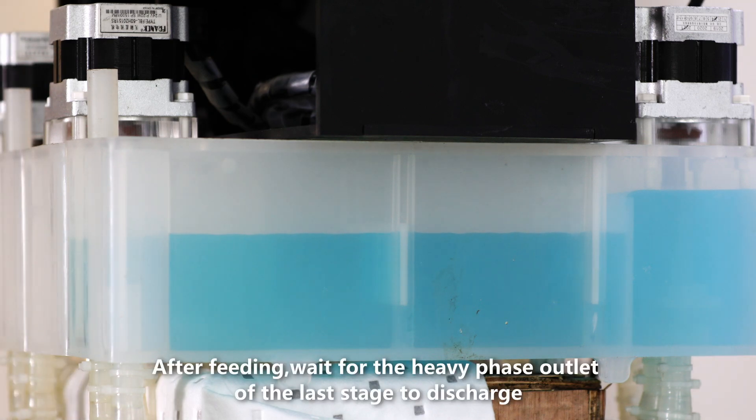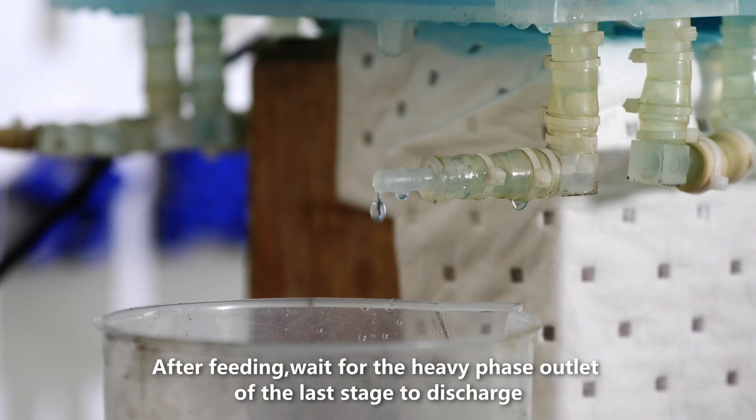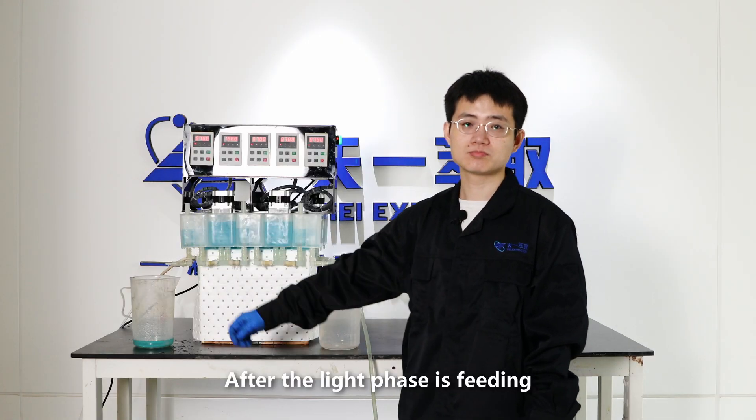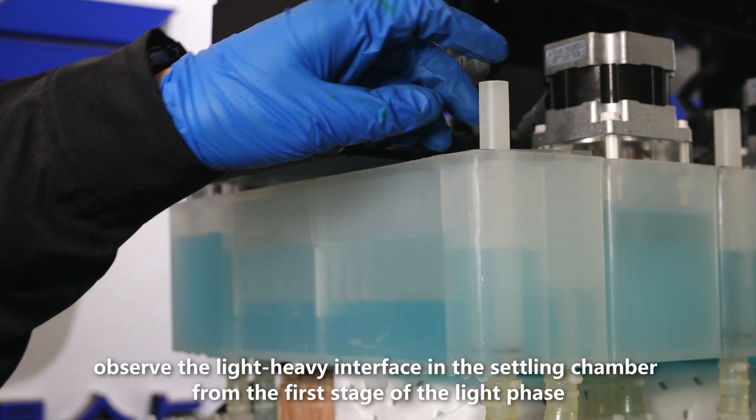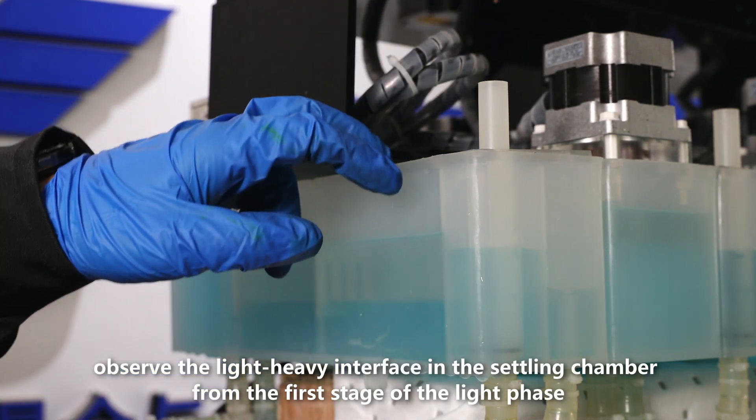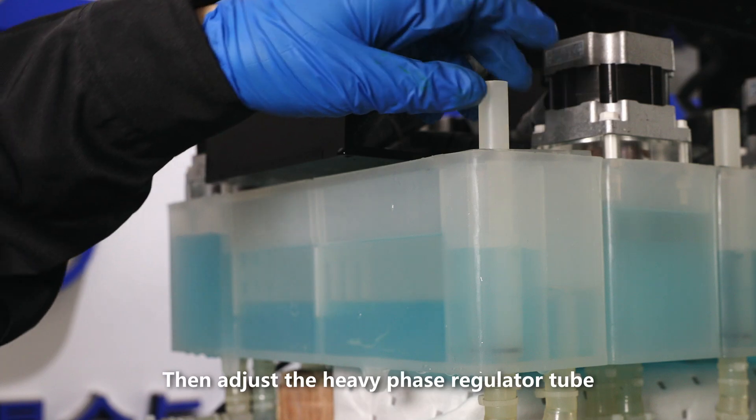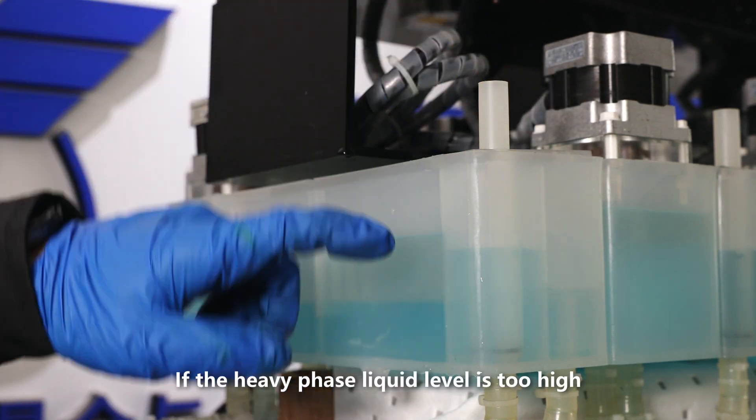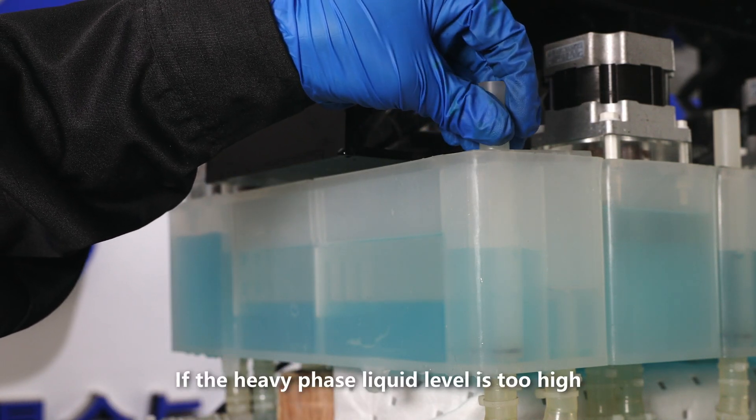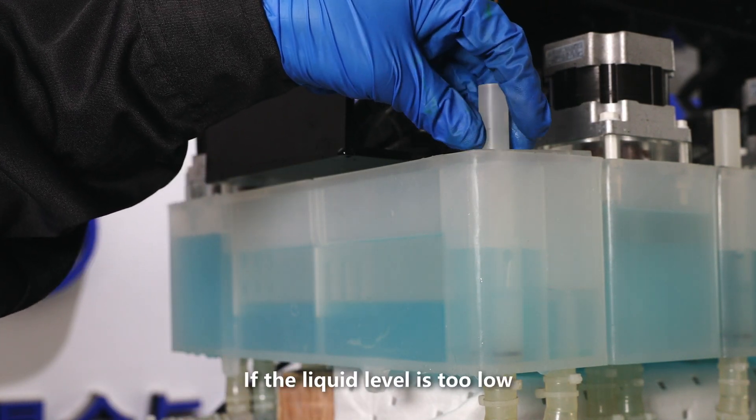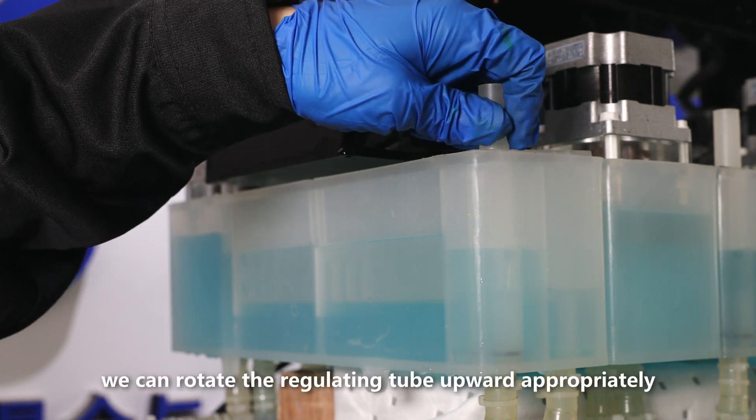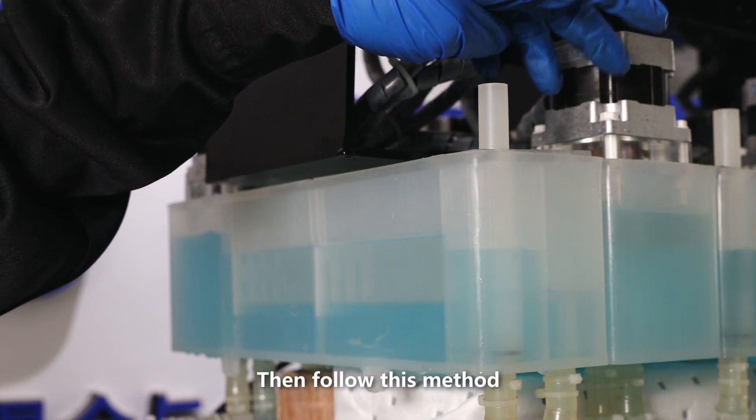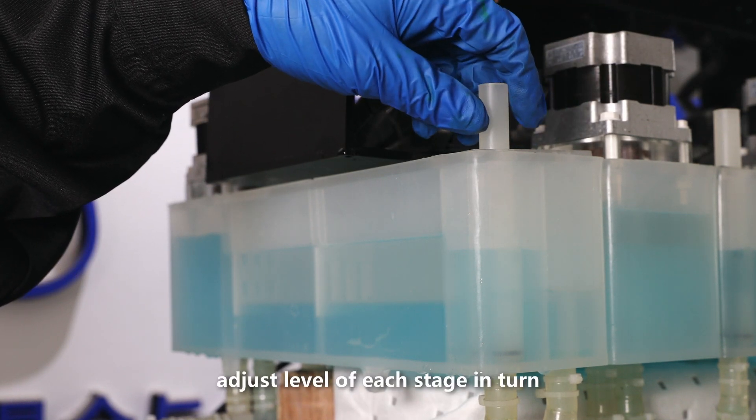After feeding, wait for the heavy phase outlet of the last stage to discharge. The light phase begins to enter. After the light phase is feeding, observe the light-heavy interface in the settling chamber from the first stage of the light phase. Then adjust the heavy phase regulator tube, and try to keep the ratio at 1 to 1. If the heavy phase liquid level is too high, we can rotate the regulating tube downward appropriately. If the liquid level is too low, we can rotate the regulating tube upward appropriately. Be careful not to use too much force. Then follow this method. Adjust level of each stage in turn.